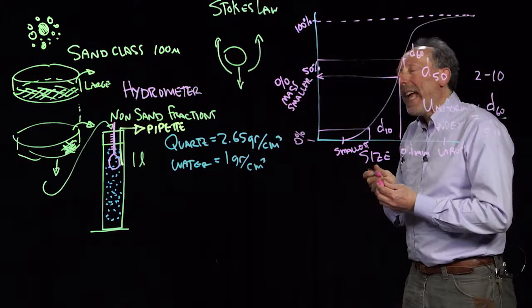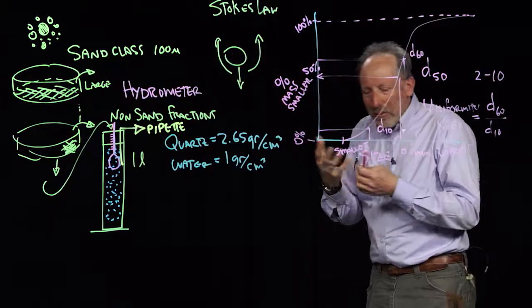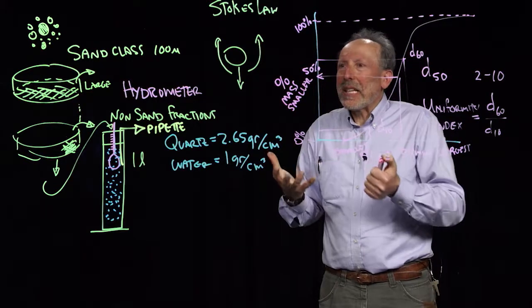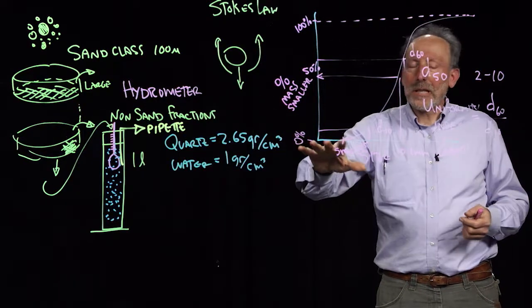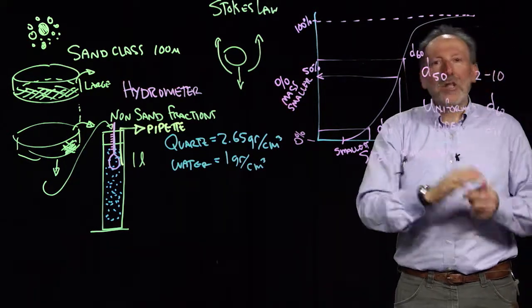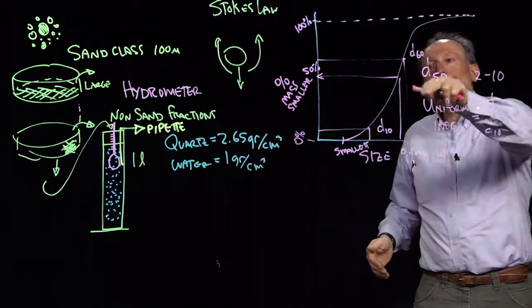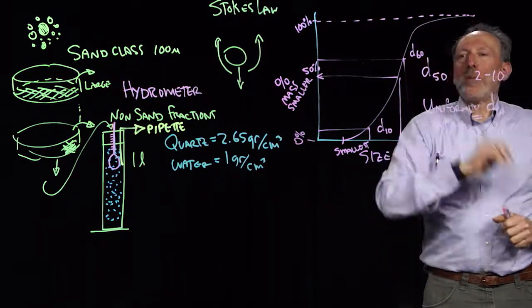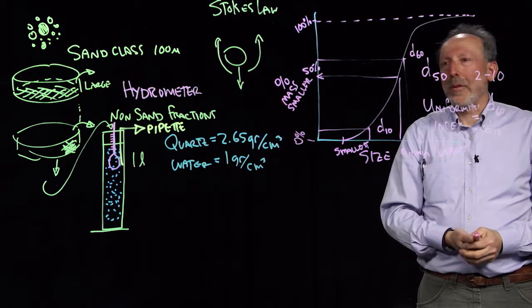So what we've taken is a natural soil that was completely heterogeneous and mixed up. We've broken it down. We've put it into a table, into a simple plot. And we've gone to the point of identifying one parameter, the uniformity index which tells us how broadly spread the particle size is. And another parameter which tells us what the average particle size is. And these are really the most reported parameters for this sort of measurement.